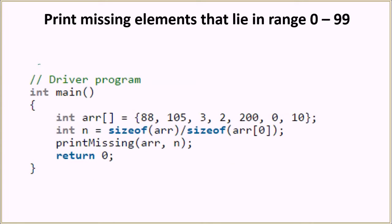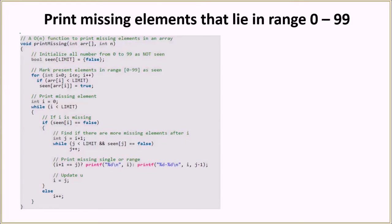Let us look at the code. This is the driver function where we have the input array and its size, then we call the function printMissing. We pass as an argument the array and its size. In this function we take as an argument the array and its size, then we are initializing the array seen as false. Limit here will have the value 100, so we initialize the array of 100 elements as false.